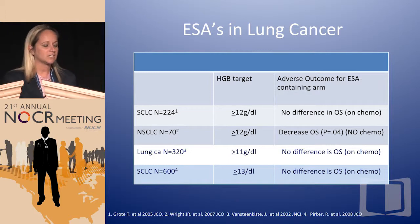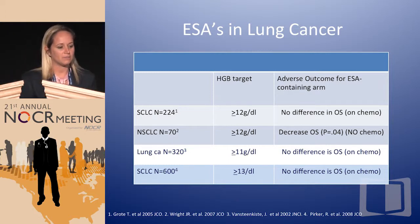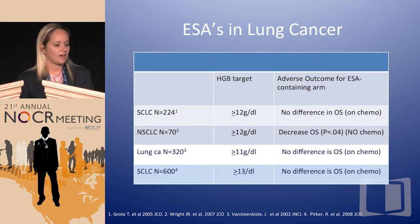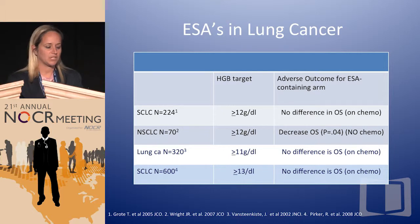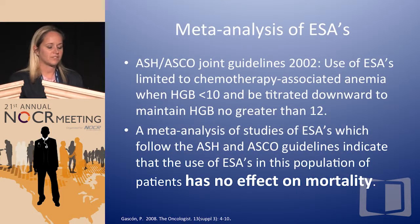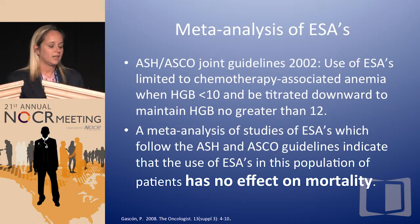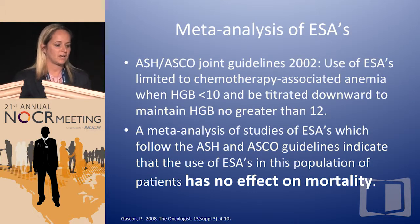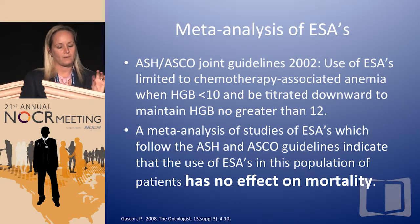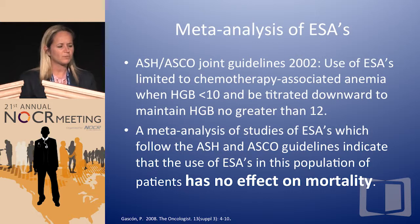You should discontinue the ESA if there's no response after eight weeks. If you're using ESAs and still transfusing someone every month, it's not working — just stop because you're not reducing the risk for transfusion. Studies in lung cancer targeting higher hemoglobins raised concerns about decreased overall survival. However, a meta-analysis showed that in studies targeting hemoglobins technically less than 12, there was no effect on mortality. So you can reassure patients that if used in the appropriate setting, there should be no effect on mortality.